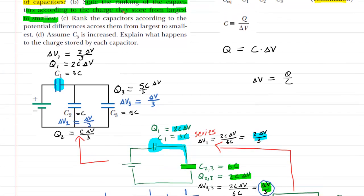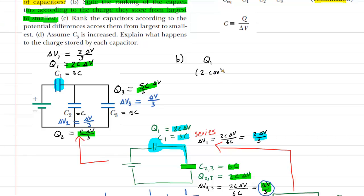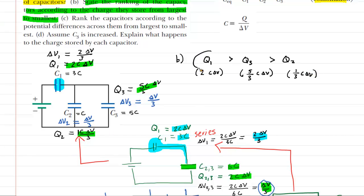Back to part B — ranking capacitors by charge from largest to smallest. Q1 is the greatest with a value of 2C·delta V. The next greatest is Q3 with a charge value of 5/3 times C·delta V. The smallest amount of charge is on Q2, whose charge is just 1/3 times C·delta V. So the ranking is Q1 > Q3 > Q2.